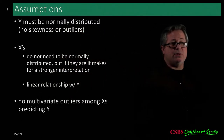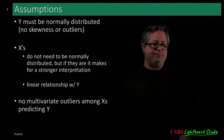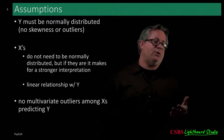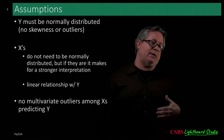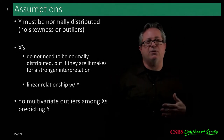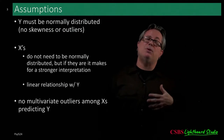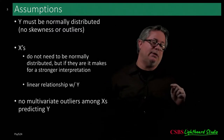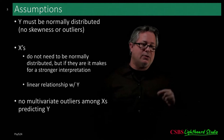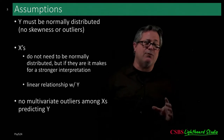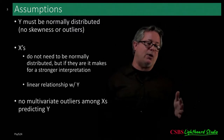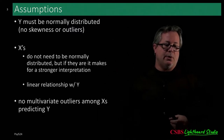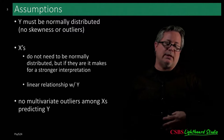We assume Y is normally distributed — no skewness, no outliers. The X's don't need to be normally distributed, but if they're continuous and normally distributed it makes for a stronger interpretation. We assume the relationships between X's and Y are linear, though we can account for some curvilinear relationships using powers. We also assume there are no multivariate outliers among the X's predicting Y.